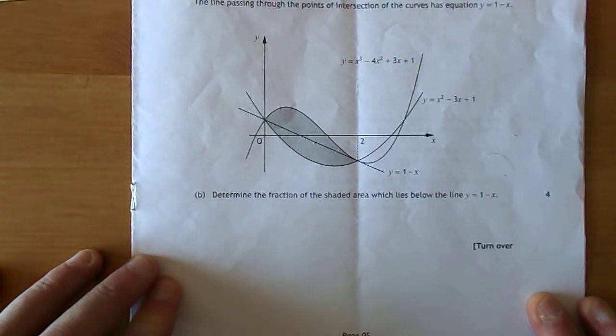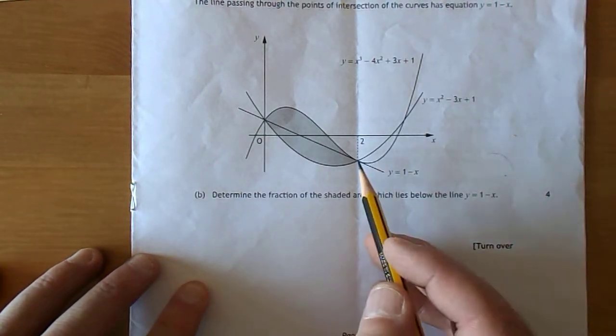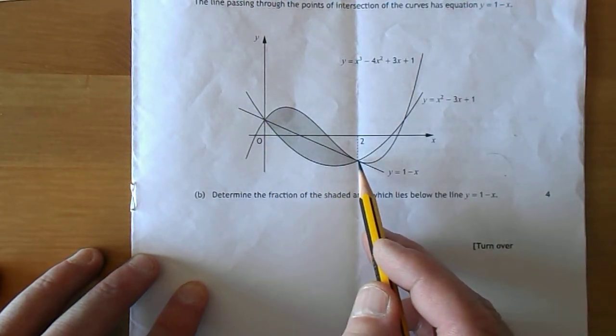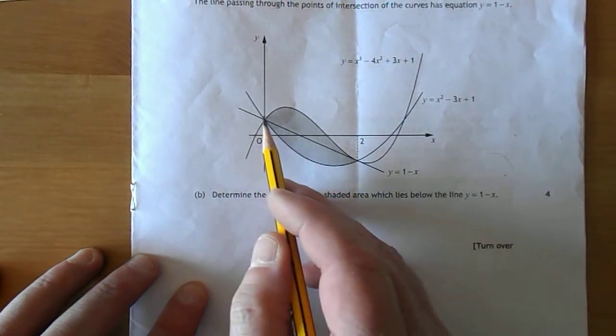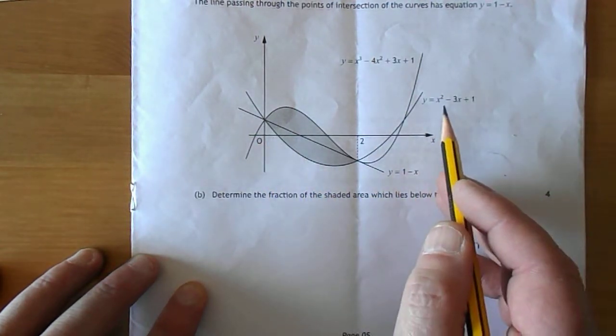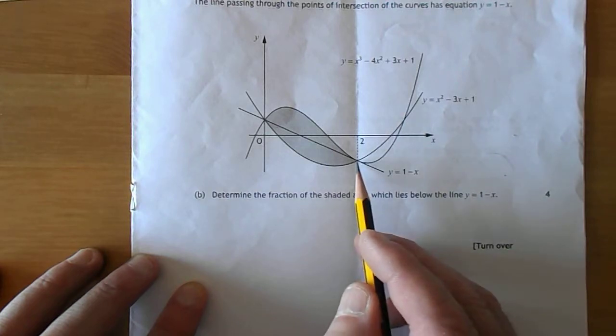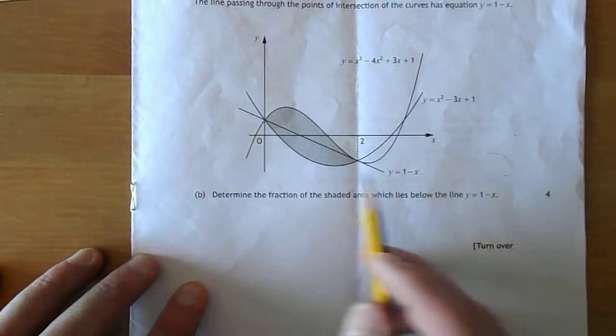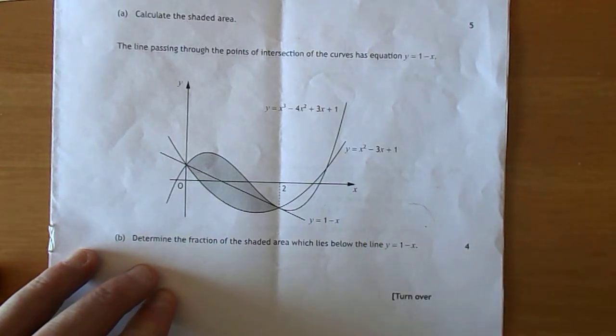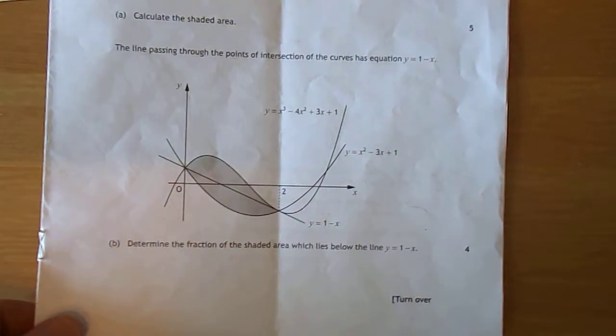I'm going to take it nice and easy here. I'm actually going to work out that area by doing an integral between the top line of 1 take x, take away the bottom, which is the curve, which is the parabola. So I'm going to integrate between 2 and 0 of 1 take x, take x squared take 3x plus 1.